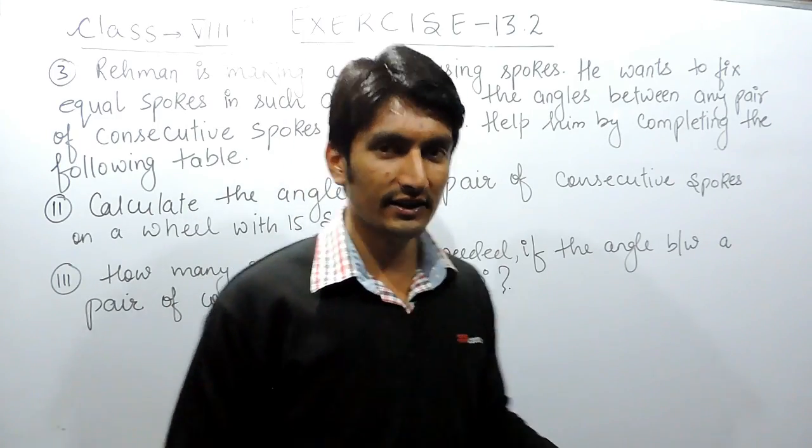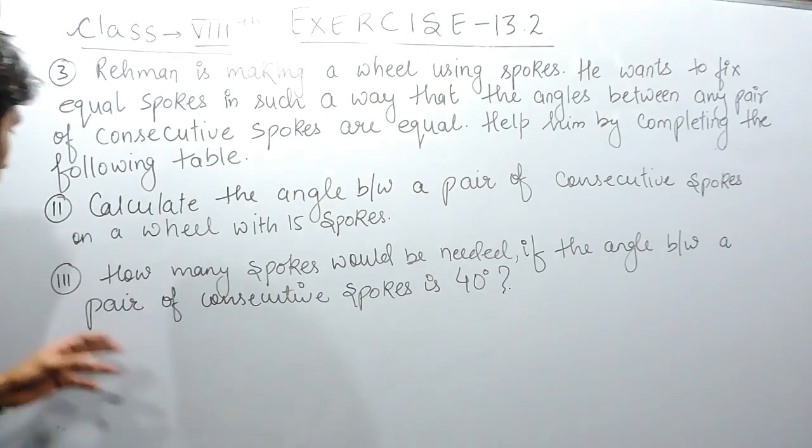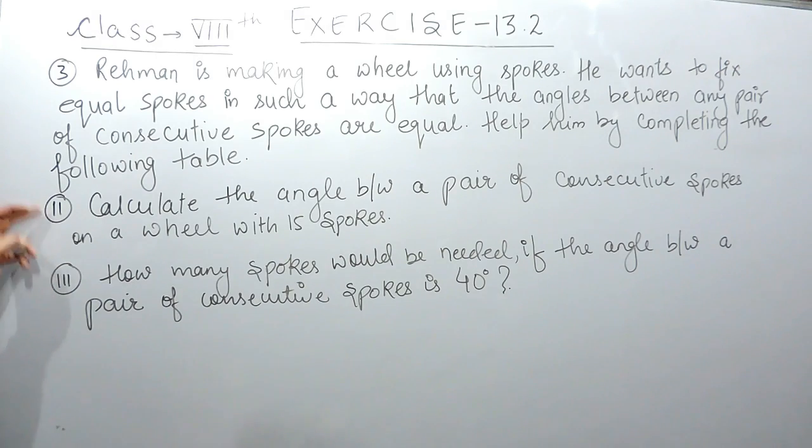Hello everyone. In this video, we are going to solve parts 2 and 3 of question number 3 from Exercise 13.2. Again, Rehman is making a wheel using spokes. He wants to fix equal spokes in such a way that the angles between any pair of consecutive spokes are equal. So in the first case, you have to calculate the angle between a pair of consecutive spokes on a wheel with 15 spokes.